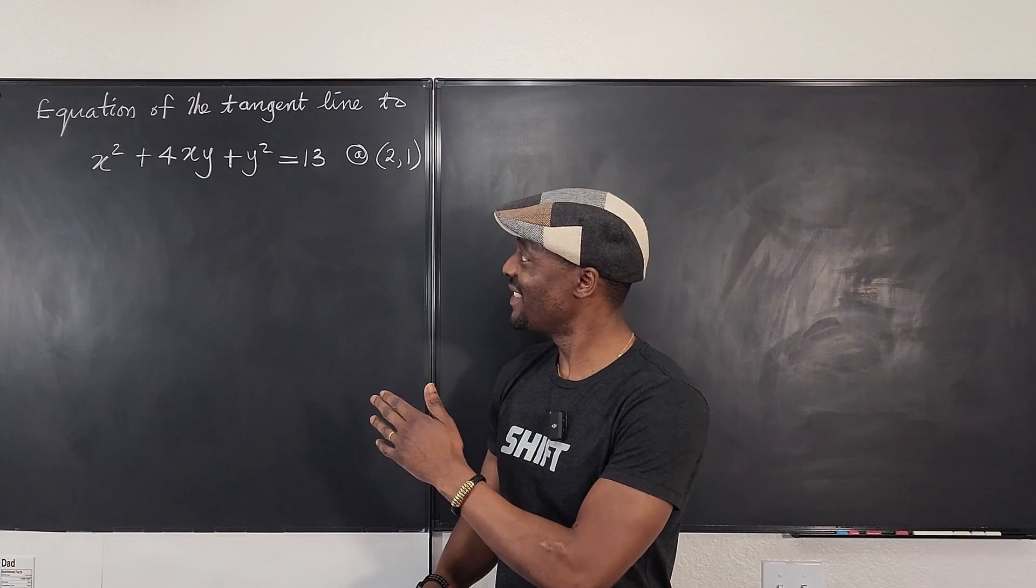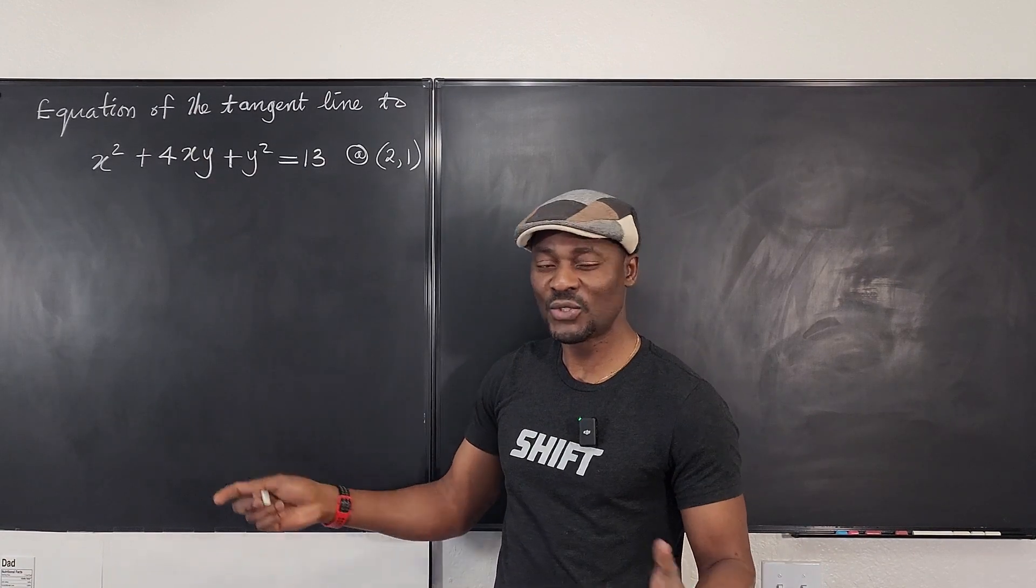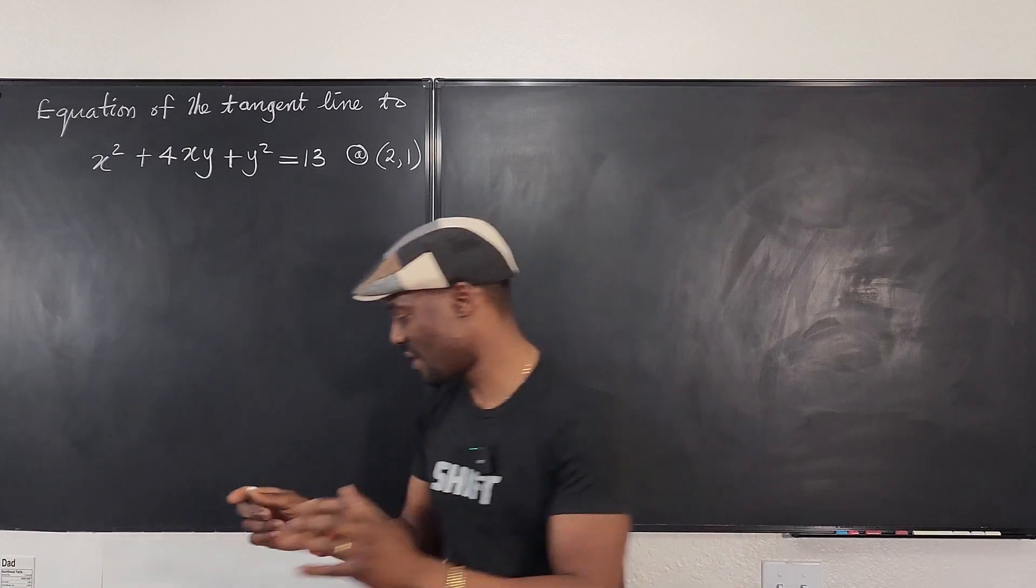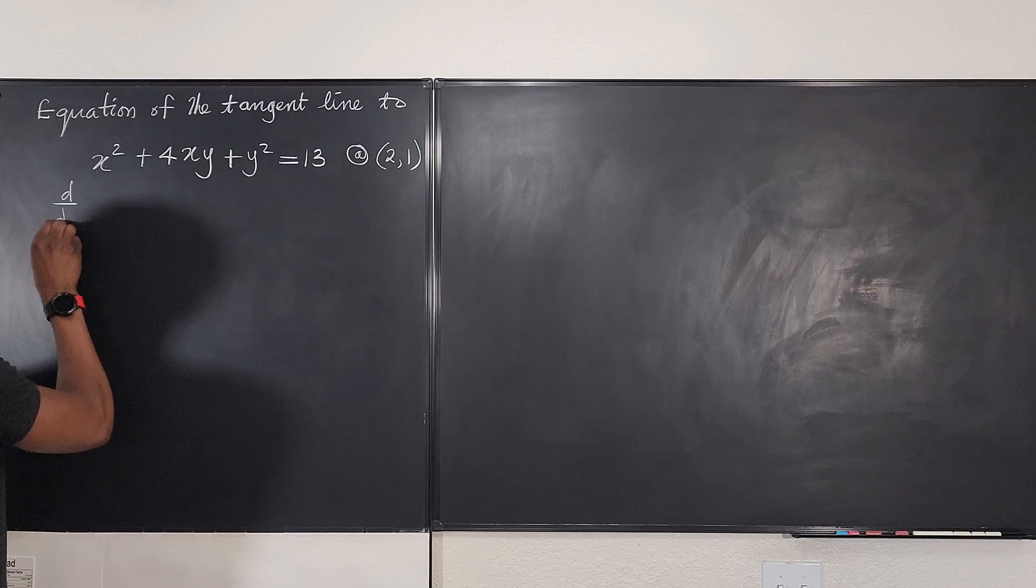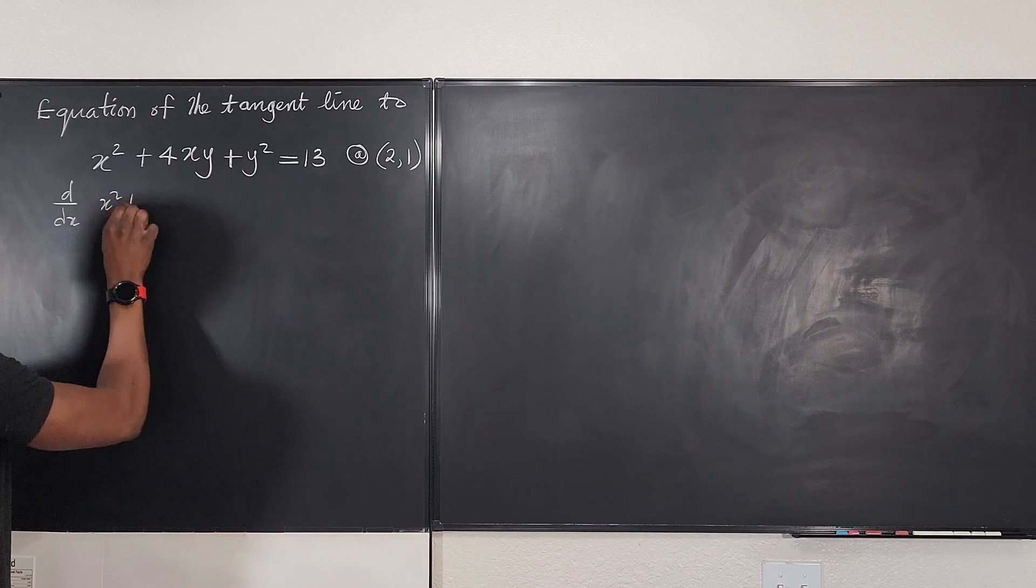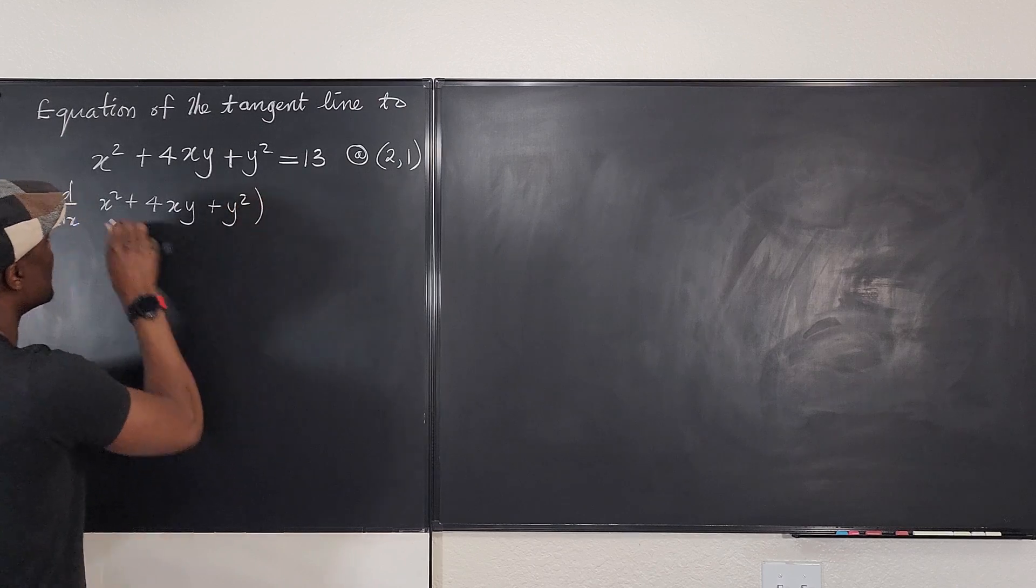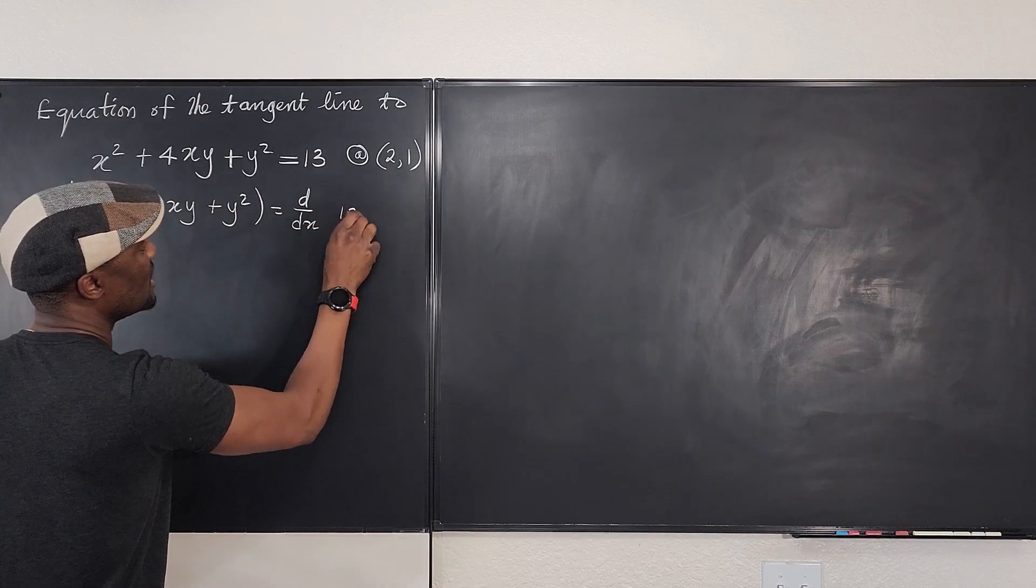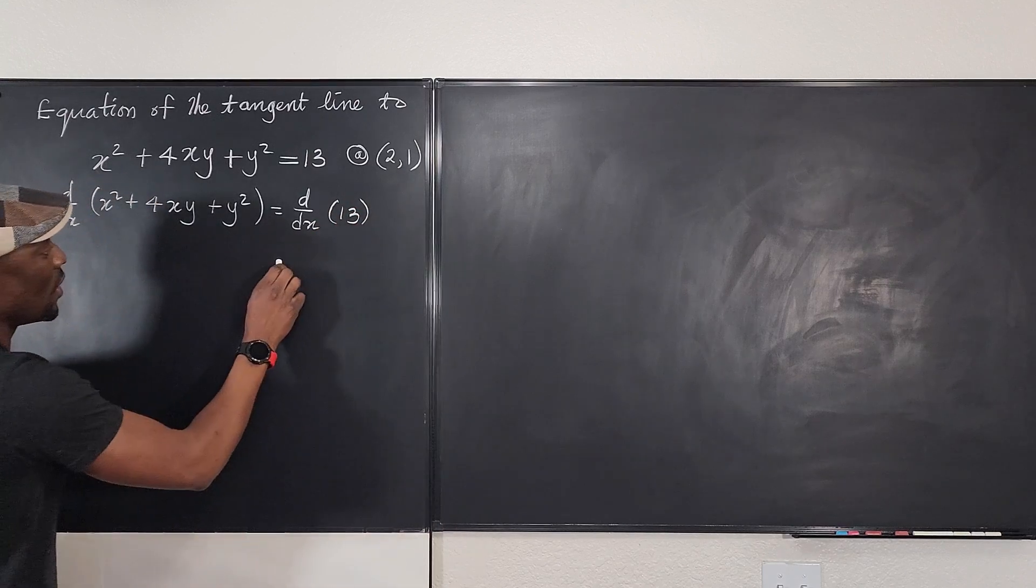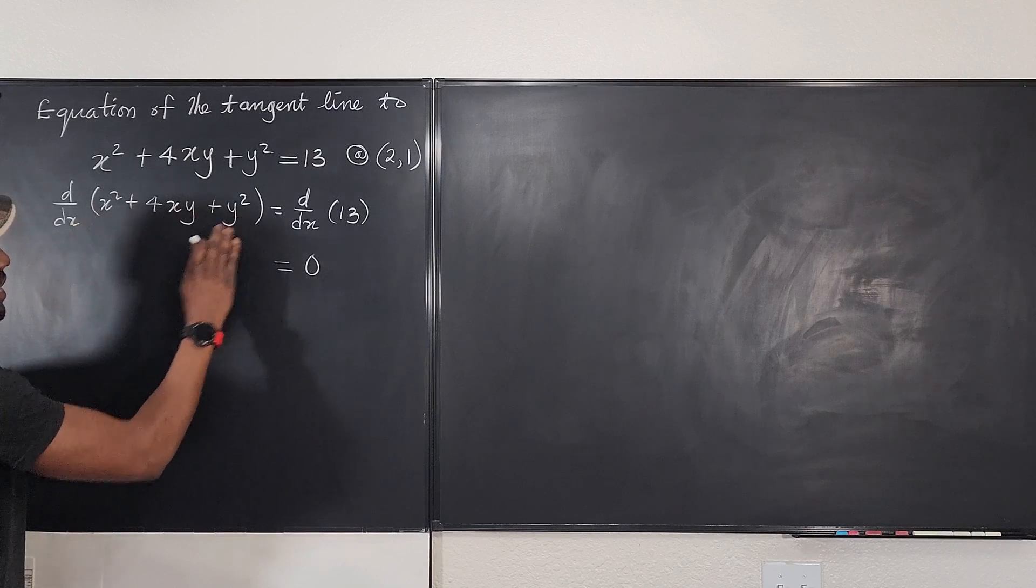As you can see, this requires implicit differentiation because the y is not isolated. So we're going to take the derivative of both sides. d dx of x squared plus 4xy plus y squared will be equal to d dx of 13. We know automatically the right hand side is going to be zero. Now let's differentiate each of these terms.